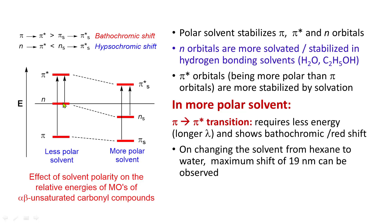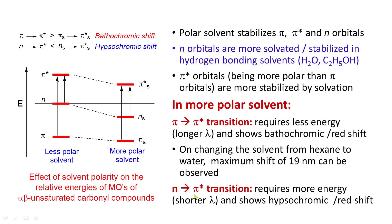For the n-to-pi-star transition, comparing n-solvated versus pi-star solvated orbitals, we find that the energy gap is greater. Therefore, n-to-pi-star transitions require more energy, corresponding to shorter wavelength, and show hypsochromic shift.